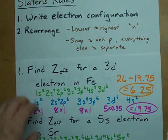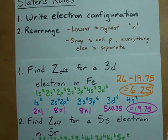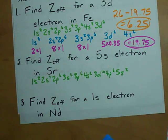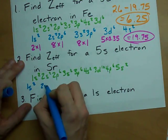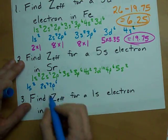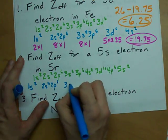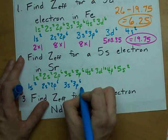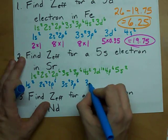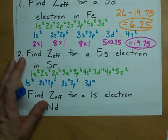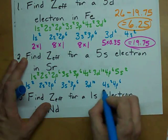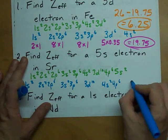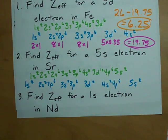Rearrange these from lowest to highest n. Group the s's and the p's. Here we go. 1s2 stays solo. 2s2, 2p6 gets grouped. 3s2, 3p6 gets grouped. 3d10, all the 3's first. 4s2, 4p6, s's and p's grouped. 5s2.